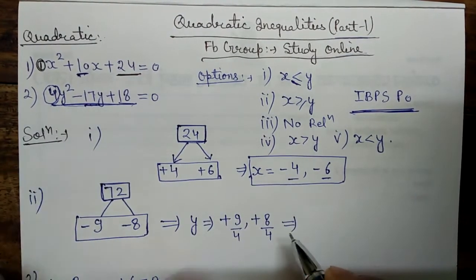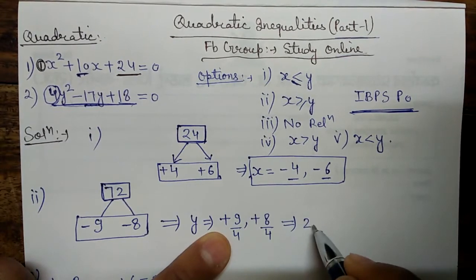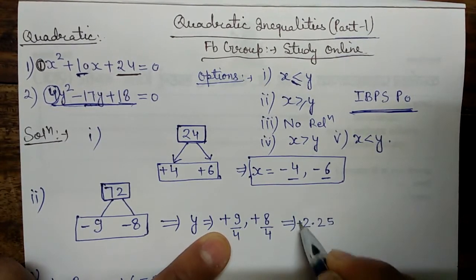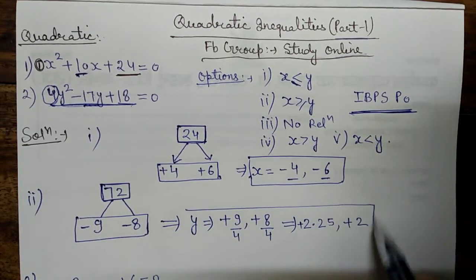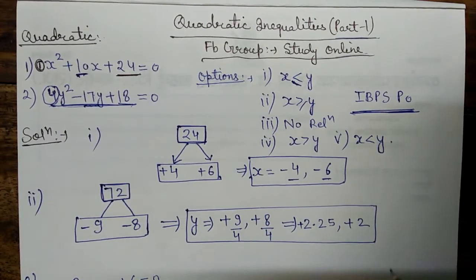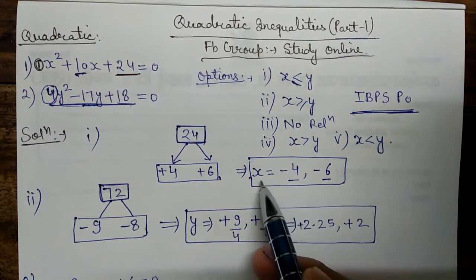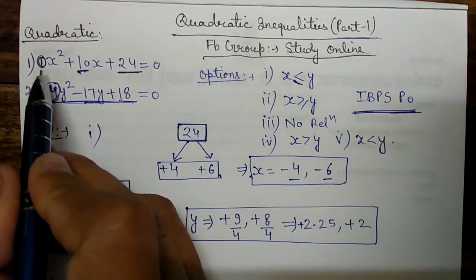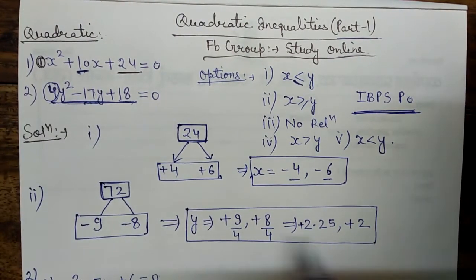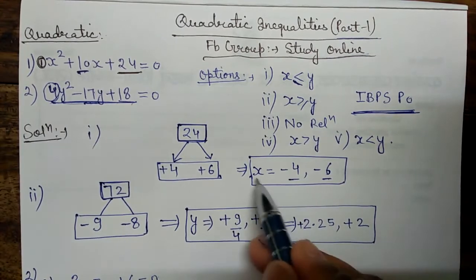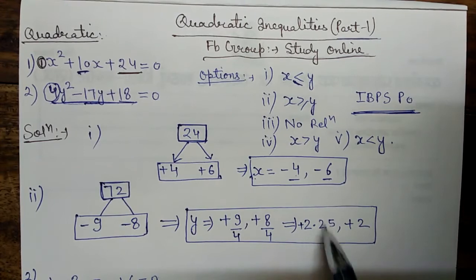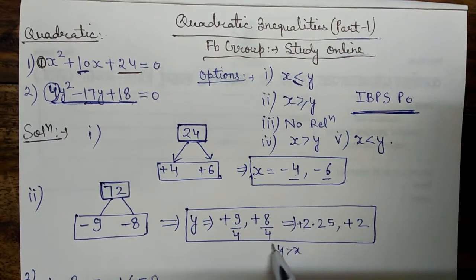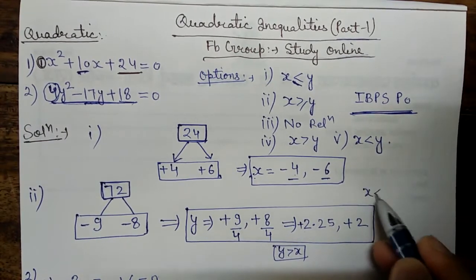So the value of y: reversing the sign gives +8 divided by 4 = 2, and +9 divided by 4 = 2.25. So the y values are approximately 2.25 and 2. The x values are both negative, and the y values are both positive, which means y is greater than x, or x is less than y.